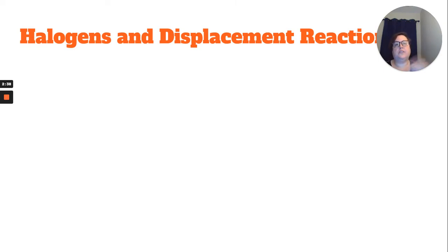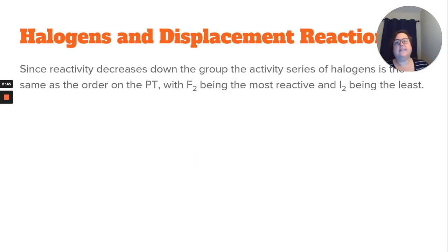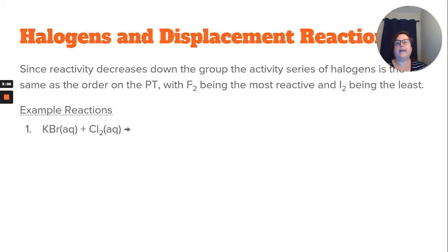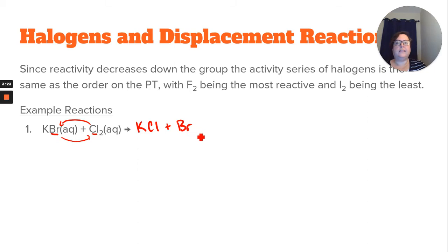Halogens and displacement reactions — this is when you switch partners, or what we call a single replacement. Since reactivity decreases down the group, the activity series of the halogens is the same as the order on the periodic table. Fluorine is the most reactive and iodine is the least reactive, so fluorine will replace all other halogens and iodine cannot replace any of them. For example, potassium bromide and chlorine: since chlorine is higher on the periodic table than bromine, it replaces the bromine, giving potassium chloride and bromine diatomic (Br2). We then balance it with coefficients 2 and 2.